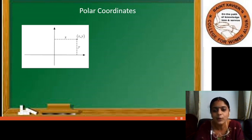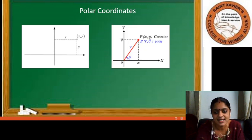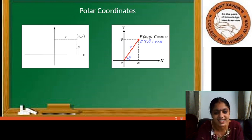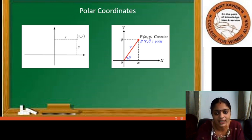Moving towards polar coordinates, consider the same point P(X,Y). Let R be the perpendicular distance of the point from the origin O, and let theta be the angle made by the point with the X-axis. With this, we can uniquely determine the point P.